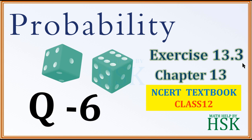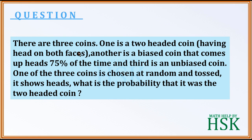Question number six of exercise 13.3. There are three coins: one is a two-headed coin, meaning it has heads on both faces; another is a biased coin that comes up heads 75% of the time; and a third is an unbiased coin where head or tail are equally likely.